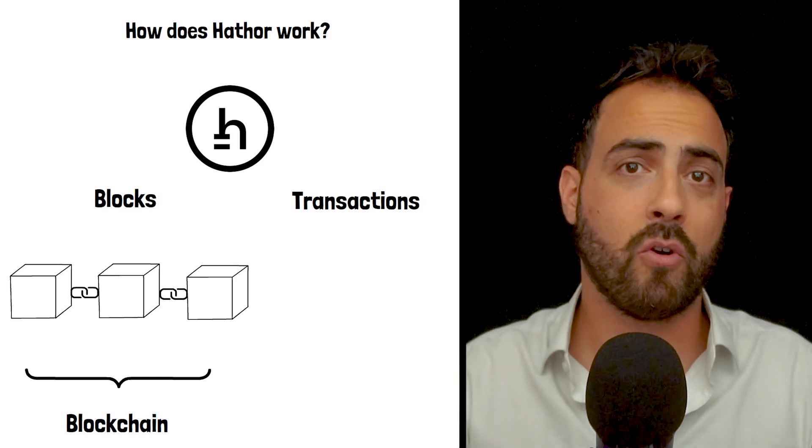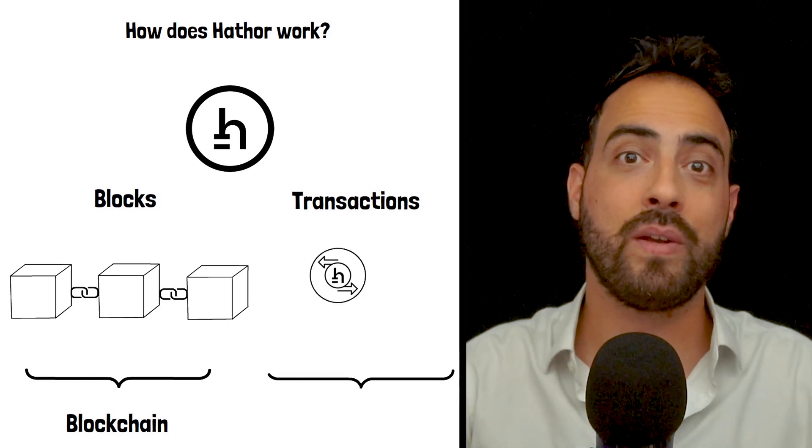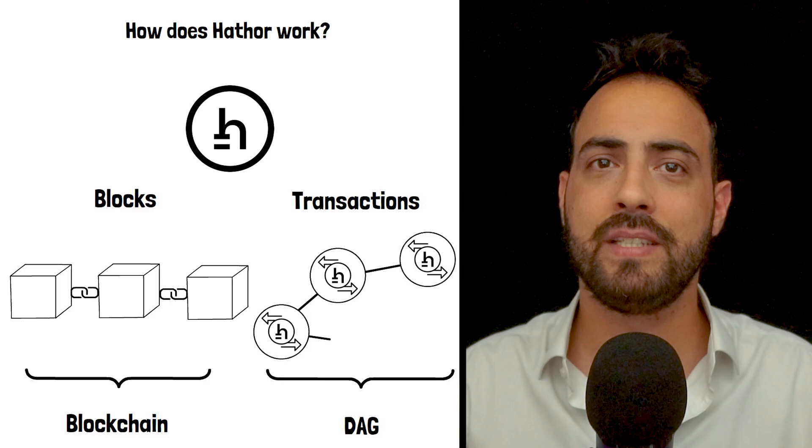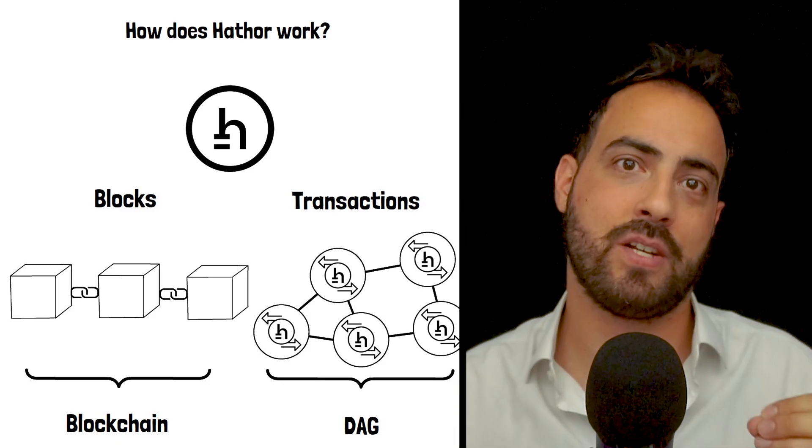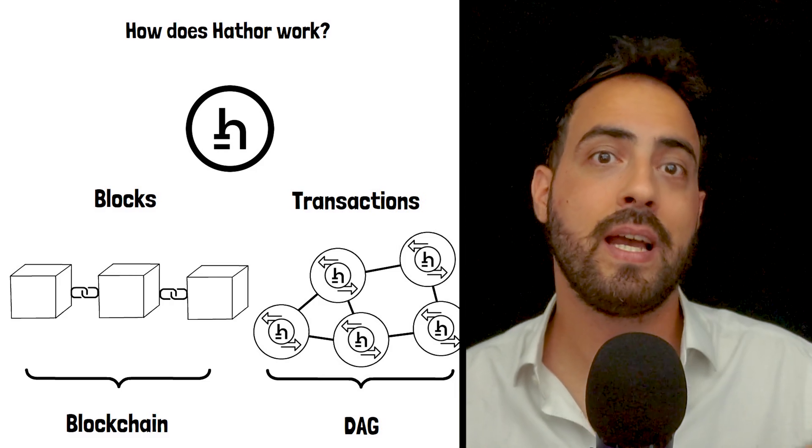Transactions, on the other hand, form a directed acyclic graph in which each transaction confirms at least two previous transactions. This creates a web-like structure that allows for parallel processing and greater throughput.